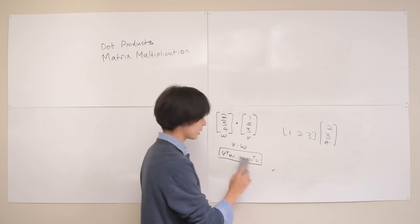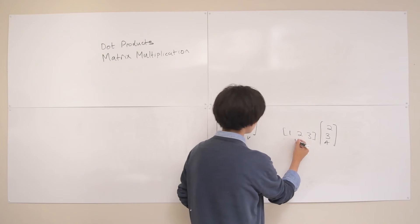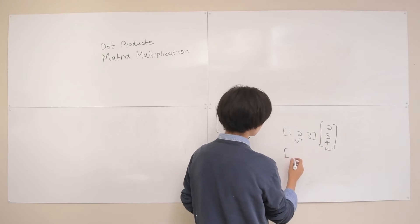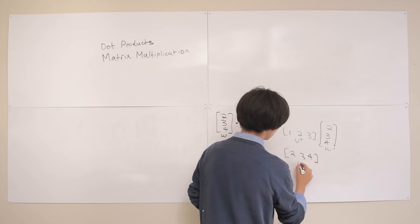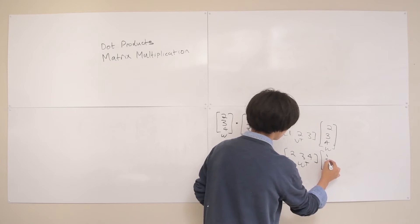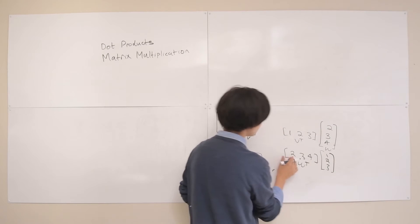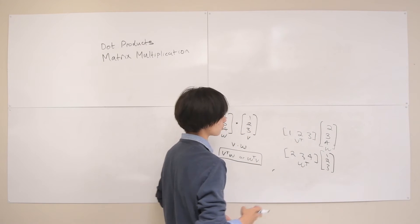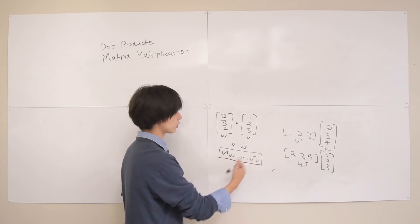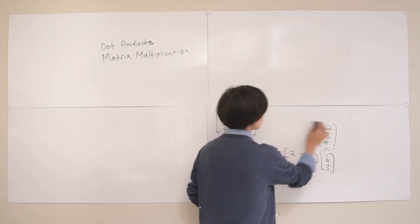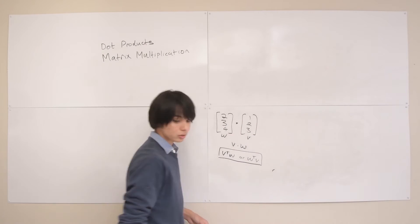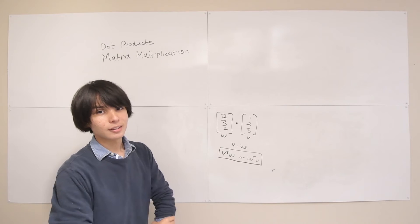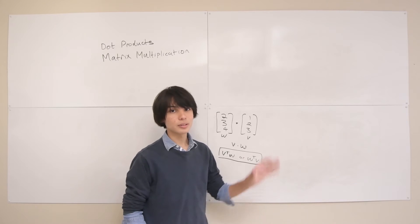We can also realize why order doesn't matter: if we do w-transpose times v — so [2, 3, 4] times [1, 2, 3] — we get 2×1 + 3×2 + 4×3, which is the same thing with multiplications in reversed order. That's why it doesn't matter which order you do them in. So that's the dot product — a very important thing to remember used all the time in many applications.